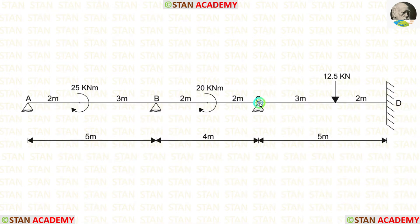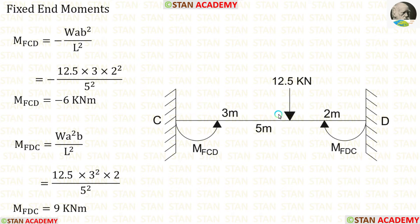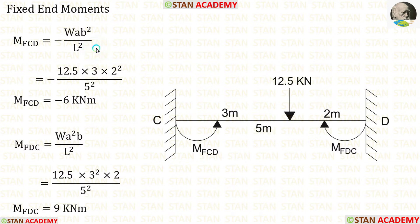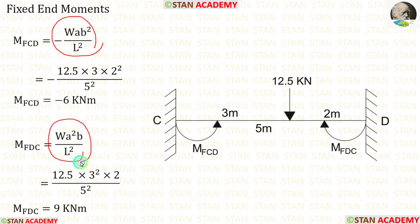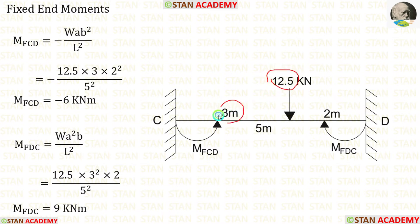Now let us find the fixed end moments in span CD. In span CD, there is a concentrated load of 12.5 kN not acting at the center. The formulas are minus WAB²/L² and positive WA²B/L². Here W is 12.5, A is 3, B is 2, L is 5. Applying these values, we get M_CD and M_DC.